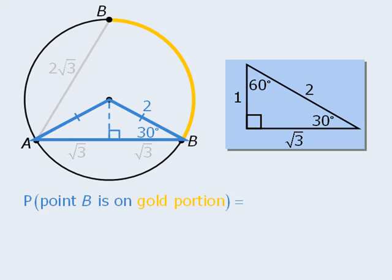From here, we can see that since this is an isosceles triangle, this angle must be 30 degrees as well, and the third angle must be 120 degrees.